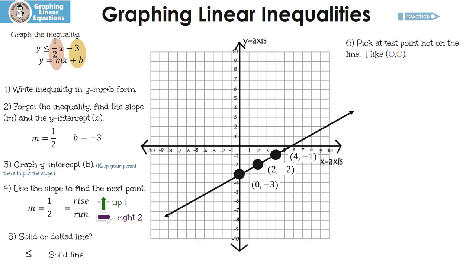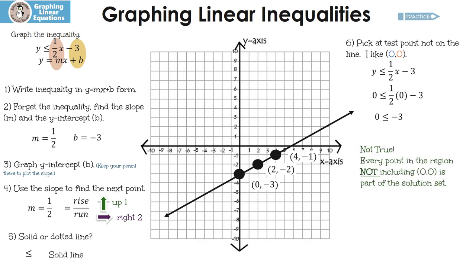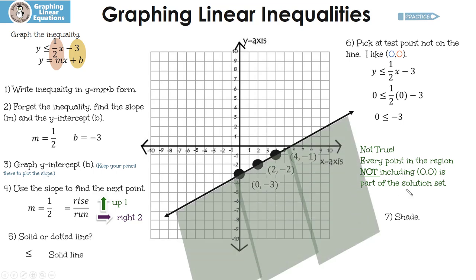Now we're going to pick a test point to decide which region to shade. I like 0, 0. I'm going to substitute 0, 0 in and I end up with 0 is less than or equal to negative 3. Well, this one's not true. So that means every point in the region not including 0, 0 is part of the solution set. Since 0, 0 is not true, we are not going to shade that side — we're going to shade the other side.